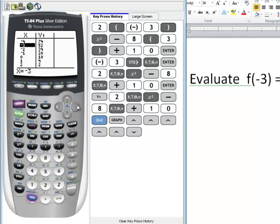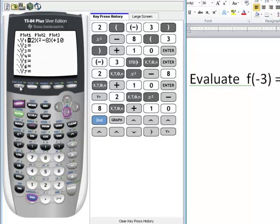At the value of negative 3, we see that our y₁ value is 52. Y₁ is listed there because that's the first equation we entered.